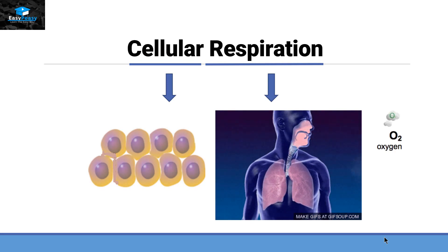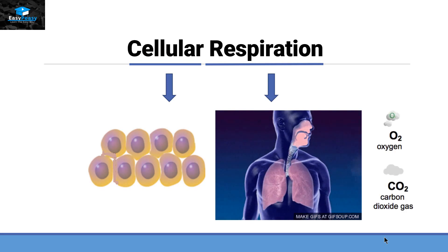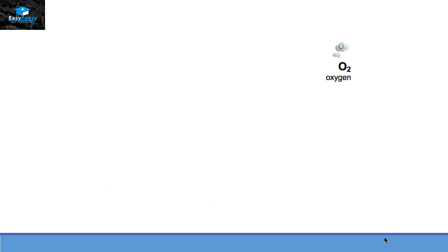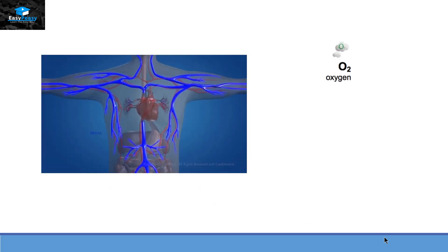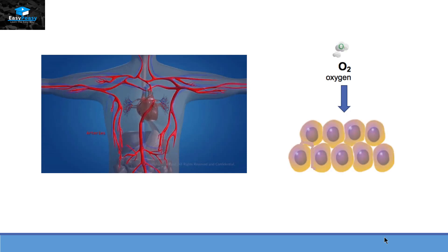In humans we take in oxygen and we pump out carbon dioxide. This oxygen through our circulatory system enters each and every cell of our body.